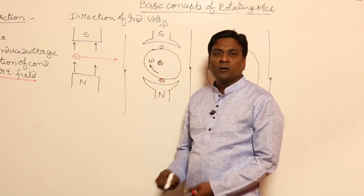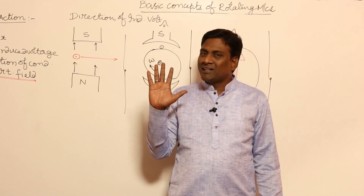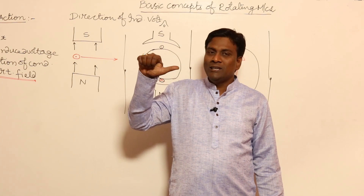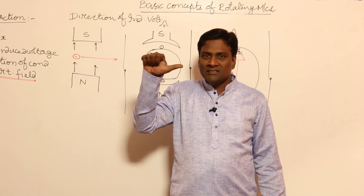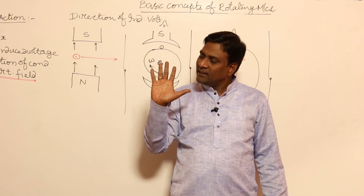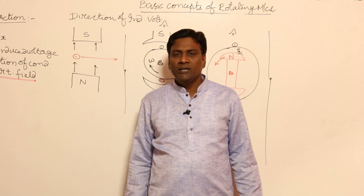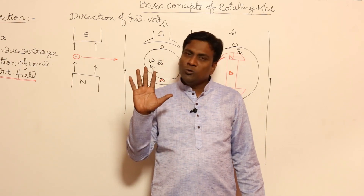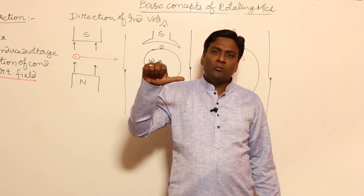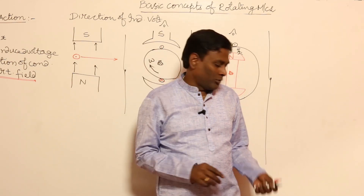Already we know the right hand thumb rule: if current is flowing in this direction, flux will be in this direction; if current is in this direction, flux will be in this direction. Now let us include the right hand thumb rule into Fleming's right hand rule.